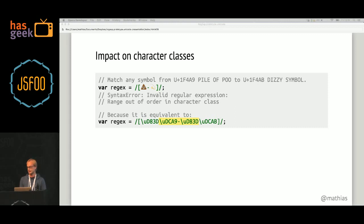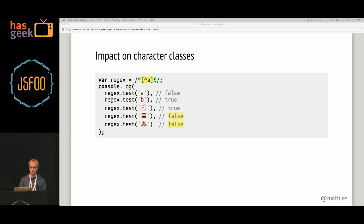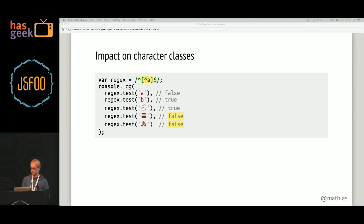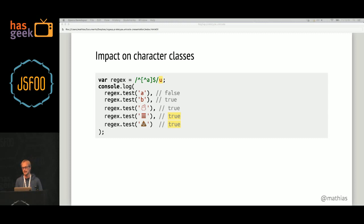There's also an impact on negated character classes. Within a character class, you can use the caret symbol at the start to mean: match anything that is not part of this class. For example, [^A] matches any character that is not A. Without the U flag in ECMAScript 5, this only matches BMP symbols — it won't match astral symbols like the pile of poo or the tetragram. But if you add the U flag, the same regular expression matches the much bigger set of all Unicode symbols except for A.